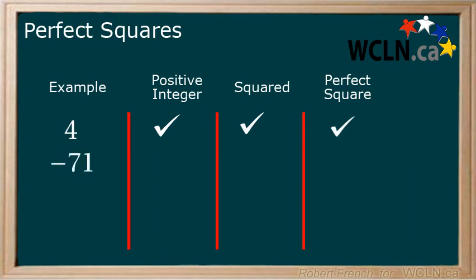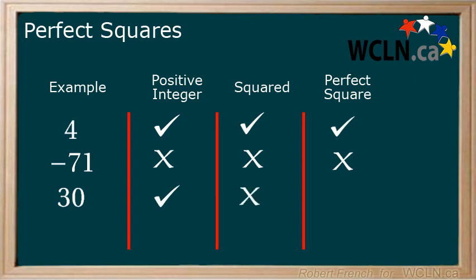Negative 71 — it is a negative number and therefore not a positive integer. There is not an integer that can be squared to get negative 71. So negative 71 is not a perfect square. 30 — it is a positive integer, but there is not a positive integer that can be squared to get 30. Therefore, 30 is not a perfect square.